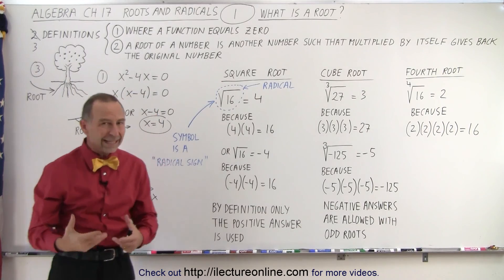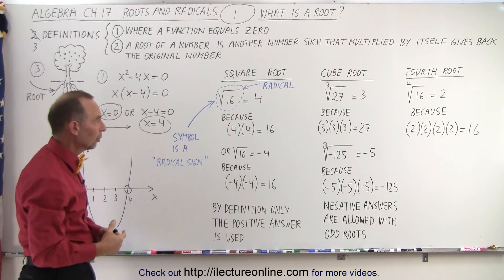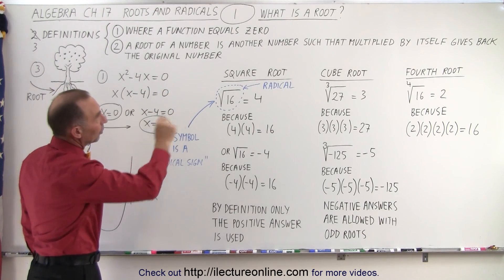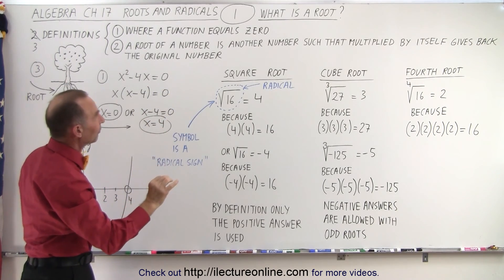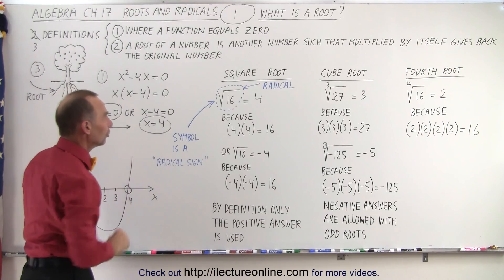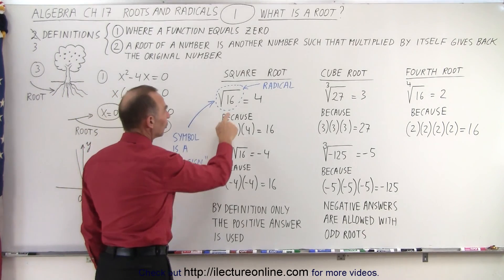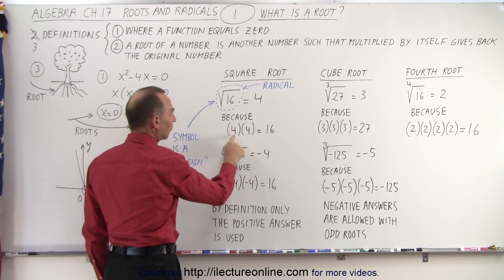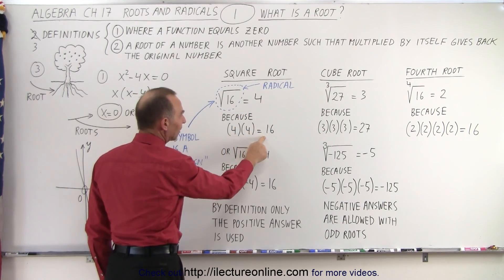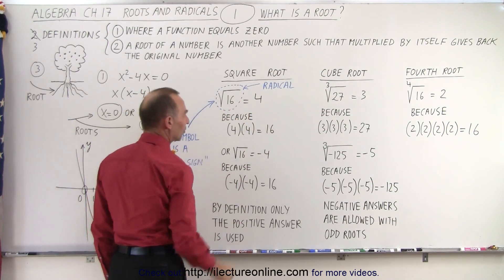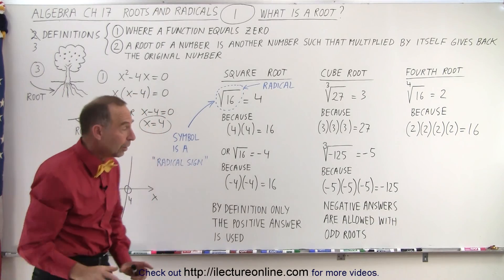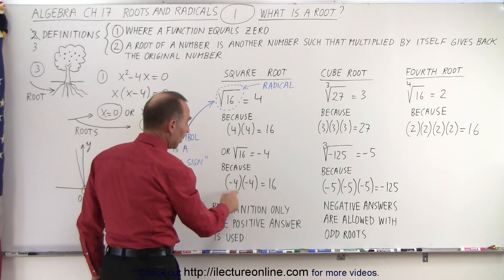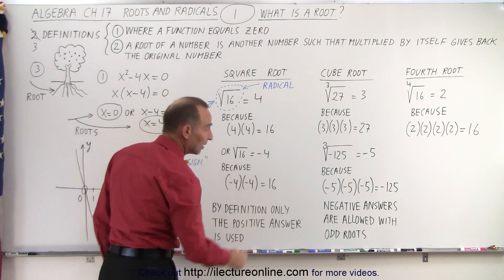So what is a square root? By definition, a root of a number is another number such that, multiplied by itself, it gives back the original number. For example, the square root of 16 is 4, such that when we take 4 and multiply it by itself, we get back 16. You might ask about negative 4 — because if you take negative 4 and multiply it by itself, you also get 16.